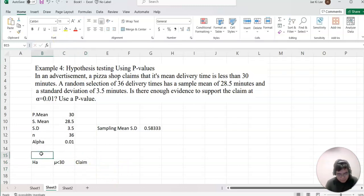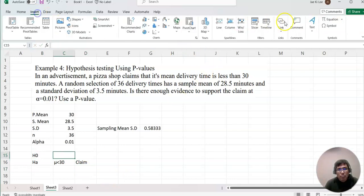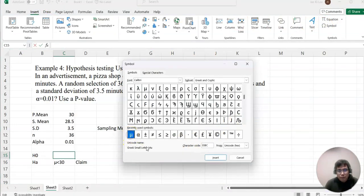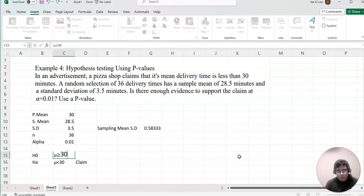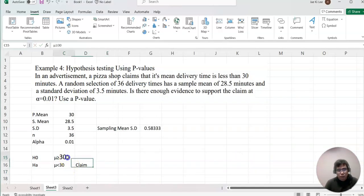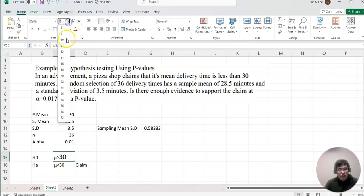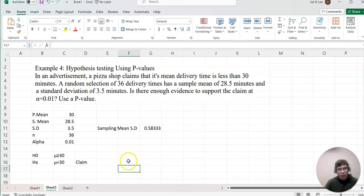H-0 will be mu greater than or equal to 30. Now we have two different hypothesis settings.